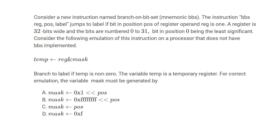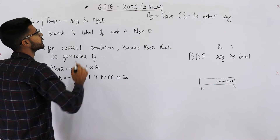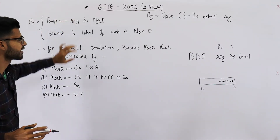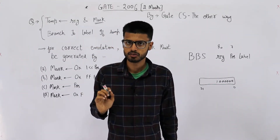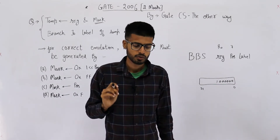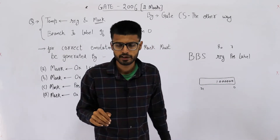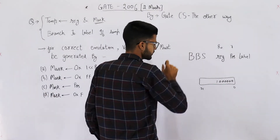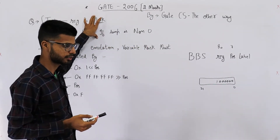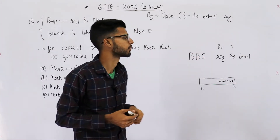Now consider the emulation of this instruction on a processor that does not have BBS implemented. They have given code to implement BBS using two lines, where the variable temp is a temporary register. The goal is to find how the variable mask must be generated, so that these two lines correctly emulate the BBS instruction on a processor that does not natively support it.